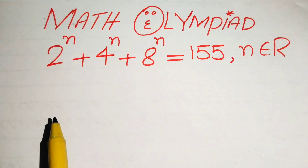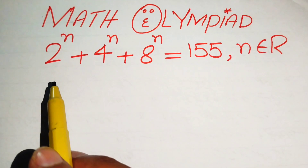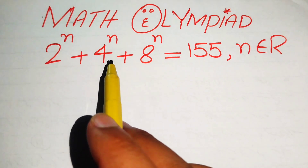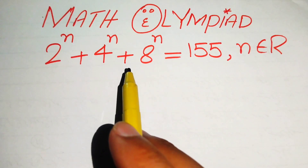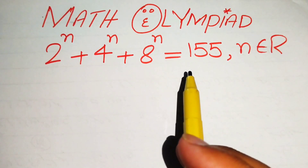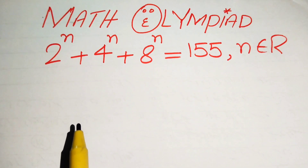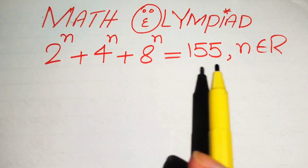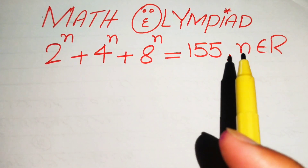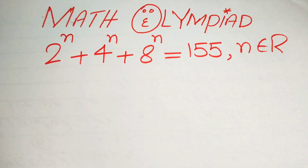Hello everyone, welcome. We are going to solve this algebra problem: 2 to the power of n plus 4 to the power of n plus 8 to the power of n equals 155. We will solve this problem for the real values of n.